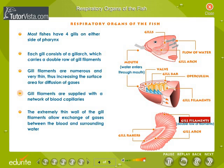Gill filaments are supplied with a network of blood capillaries. The extremely thin wall of the gill filaments allows exchange of gases between the blood and surrounding water.